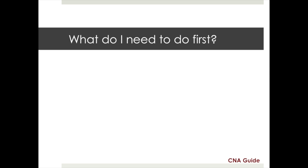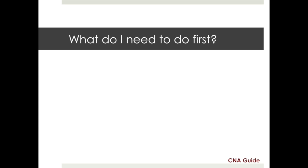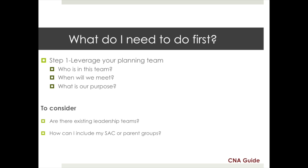This process starts with getting the right people around the table. The first step on the Comprehensive Needs Assessment Guide asks you to form a planning group. Determine who will be on the team that leads this effort. Do you already have leadership teams in place for this purpose? Do you have meeting times designated? Use this podcast to help you determine what work the planning team will engage in. Don't forget to include your parent, student, and community stakeholders as appropriate.